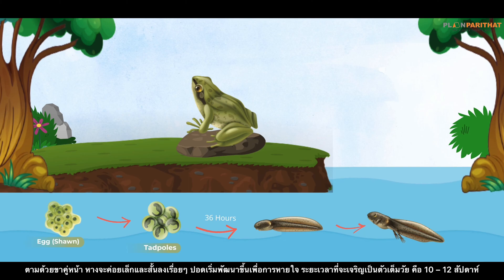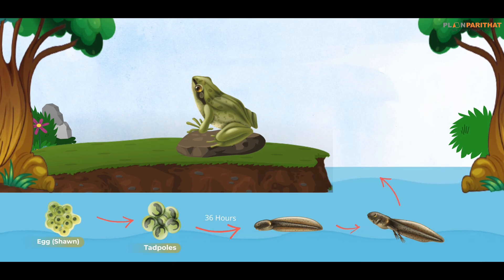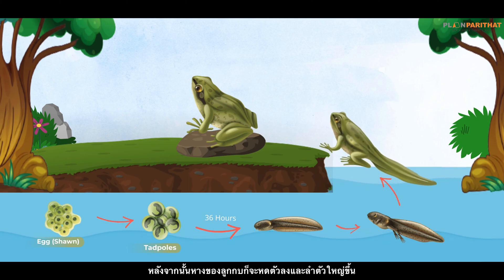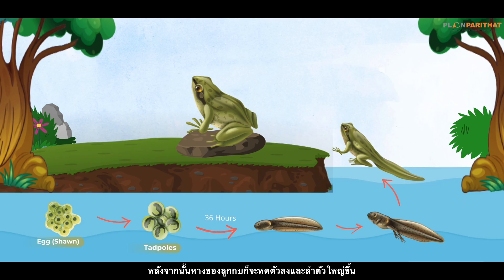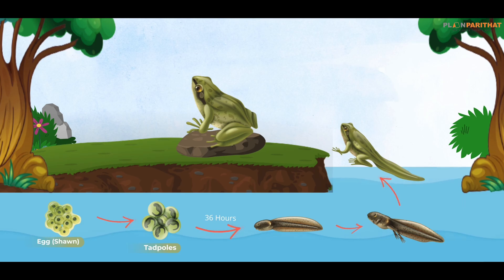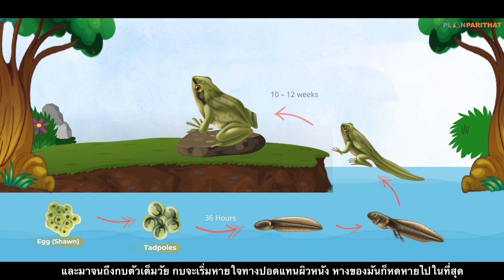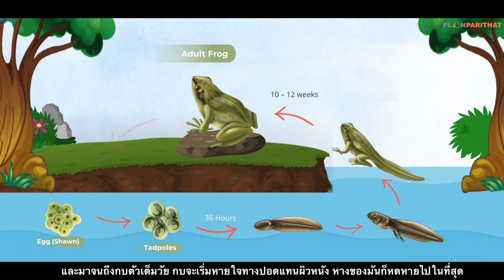For a tadpole to develop and become an adult frog, the young frog's tail continues to shrink and its body continues to grow. Eventually it matures and becomes an adult frog.